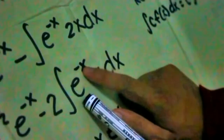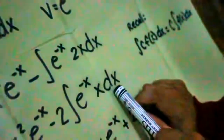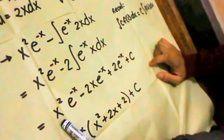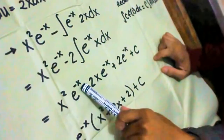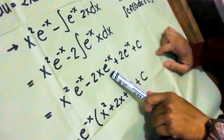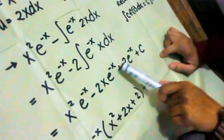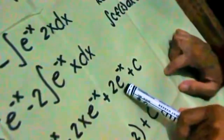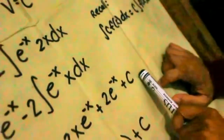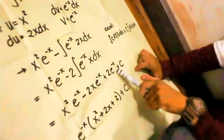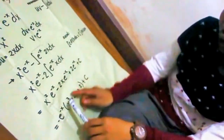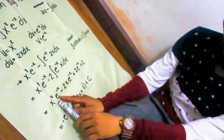So again: x squared e to the negative x, minus 2, and then finding the integral of our v which is e to the negative x times x dx. By simplifying, the answer is x squared e raised to negative x, minus 2x multiplied by e raised to negative x, plus 2 e raised to negative x, plus C.